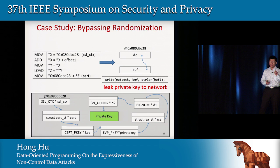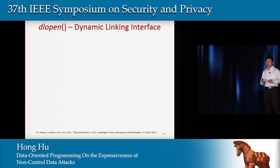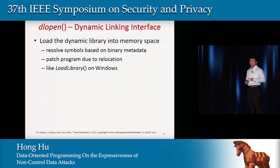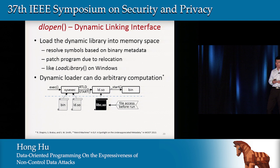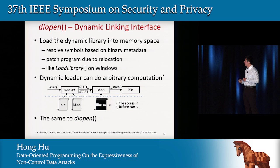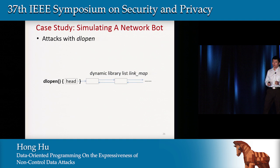Next, I'll consider using the program's existing functionality to build further attacks. First, some background on the DL open function: it is the interface to the dynamic linking loader, used to load a dynamic library into memory space at runtime. It can resolve symbols and patch the program due to relocation. On Windows systems, the equivalent is LoadLibrary. Previous work showed that the dynamic loader can do arbitrary computation if attackers can corrupt its file. We noticed the same applies to DL open — if attackers can corrupt the in-memory structure of DL open, they can perform arbitrary computation.